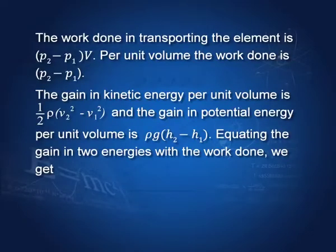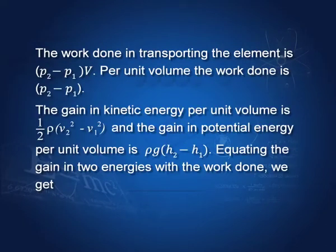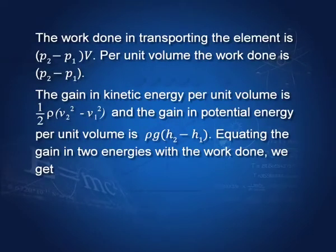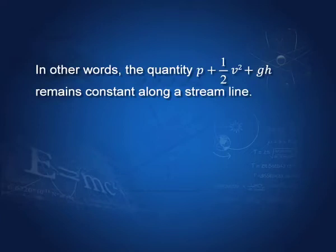The gain in kinetic energy - you see, the tube narrows down and therefore the velocity increases. The gain in kinetic energy per unit volume is half rho v2 squared minus v1 squared, and the gain in potential energy per unit volume is rho g times H2 minus H1. If we equate the gain in energy with the work done in pushing the fluid through the tube, we get this equation: P1 by rho plus half v1 squared plus g H1 equals P2 by rho plus half v2 squared plus g H2.